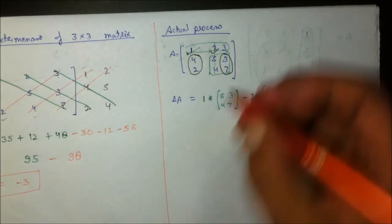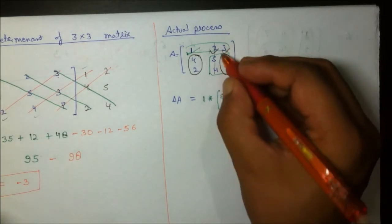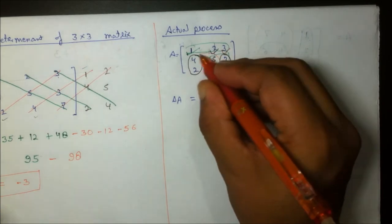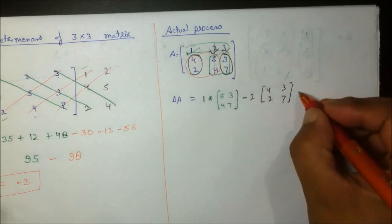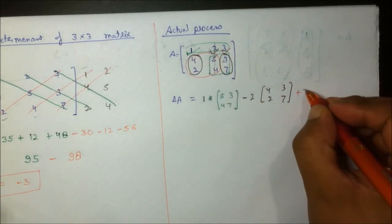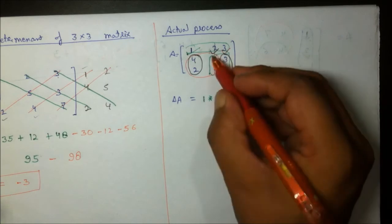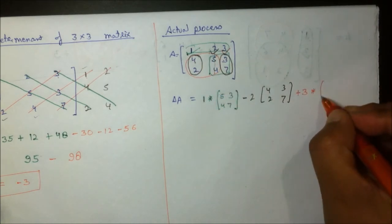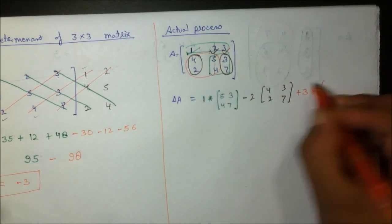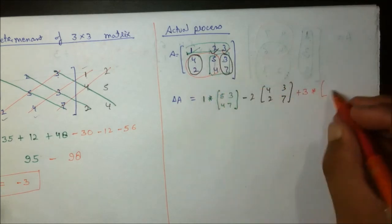For the third element 3, taking the remaining elements, I get plus 3×[4, 5; 2, 4].